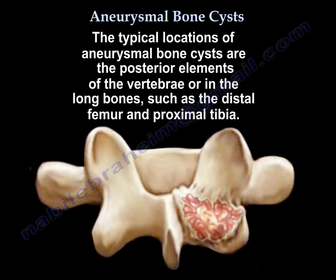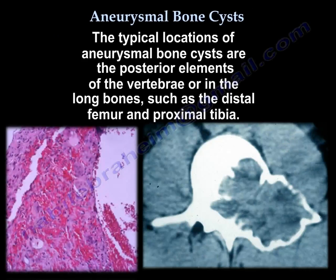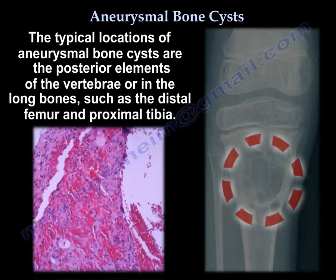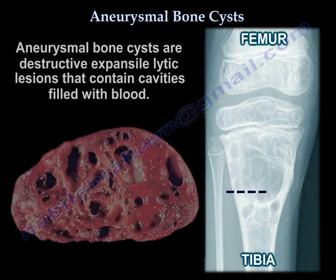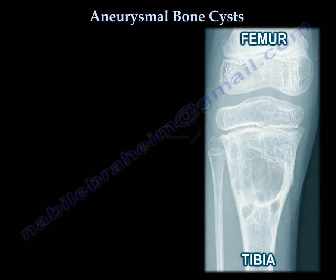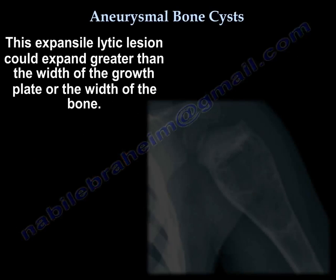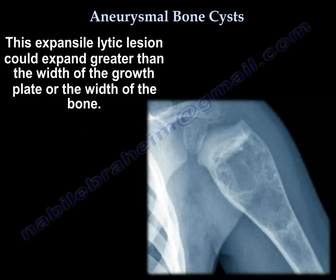The typical location of aneurysmal bone cysts are the posterior elements of the vertebrae or the long bones such as the distal femur and proximal tibia. Aneurysmal bone cysts are destructive, expansile lytic lesions that contain cavities filled with blood. This expansile lytic lesion can expand greater than the width of the growth plate or the width of the bone.